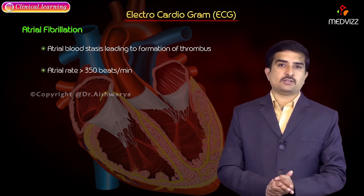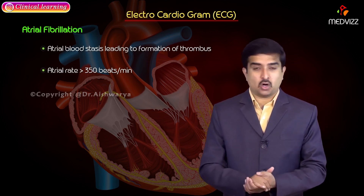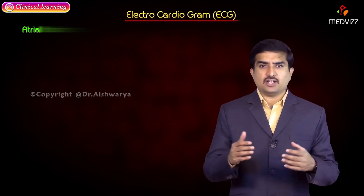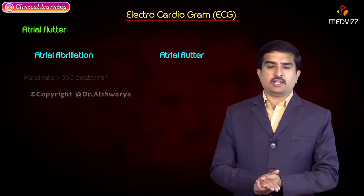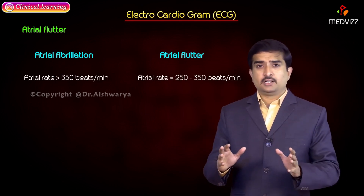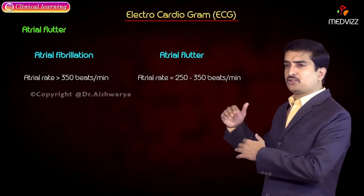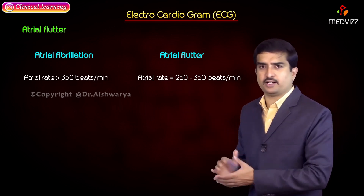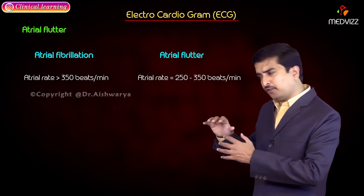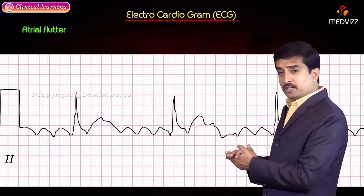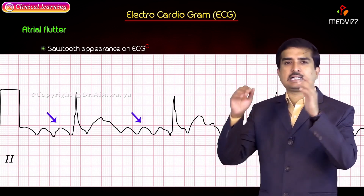In atrial fibrillation, the atrial rate is generally greater than 350 beats per minute and can reach up to 600. In atrial flutter, the atrial rate is between 250 to 350 beats per minute and generally does not exceed 350; when it exceeds 350 to 400, it leads to atrial fibrillation. Because of the rate between 250 and 350, multiple P waves appear as saw-toothed P waves in the ECG — the classical marker of atrial flutter.